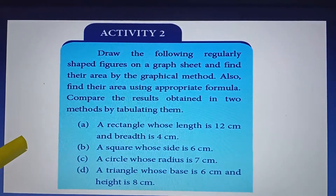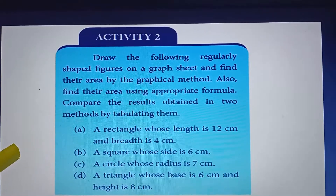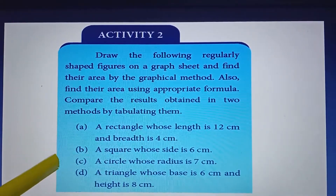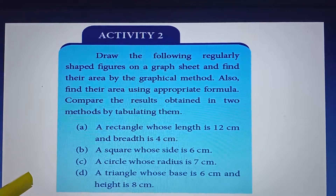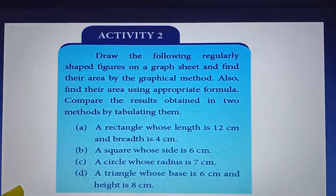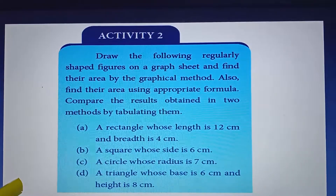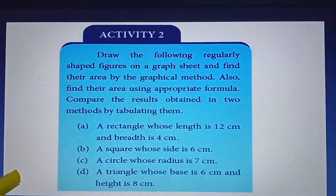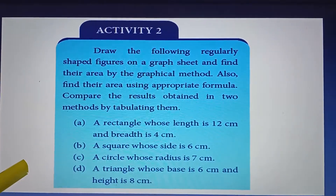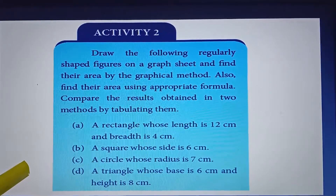Compare the results obtained in two methods by tabulating them. We have regular shaped objects — 4 examples: A, B, C, D. For these 4 objects, we will find the area using the formula and also using the graphical method. This is Activity 2. Now let us go to the experiment.